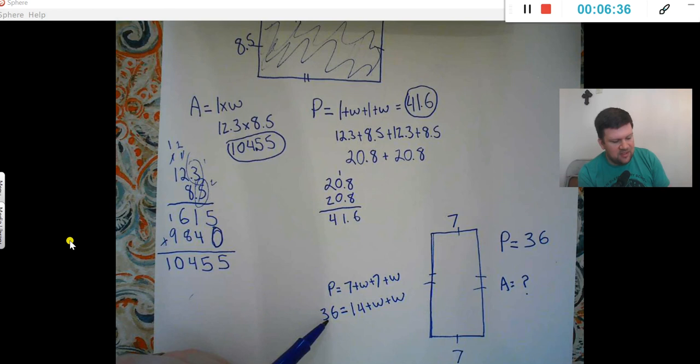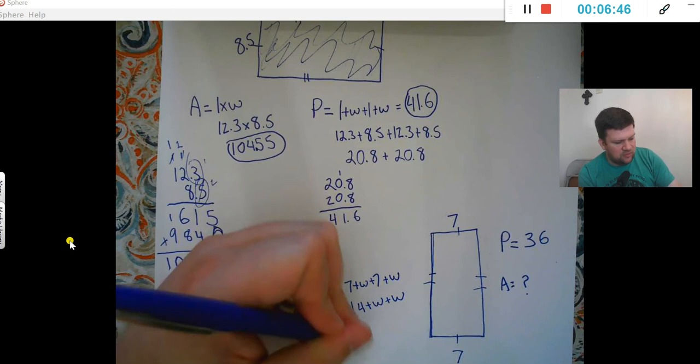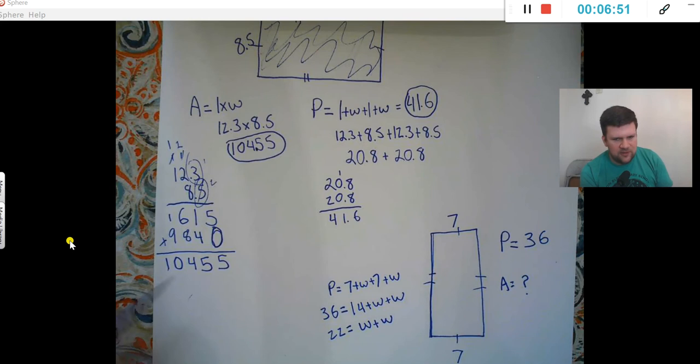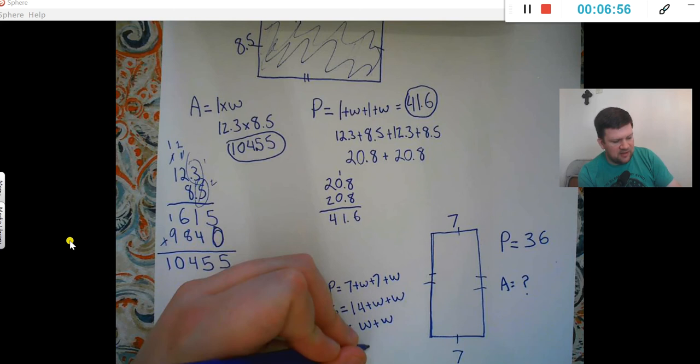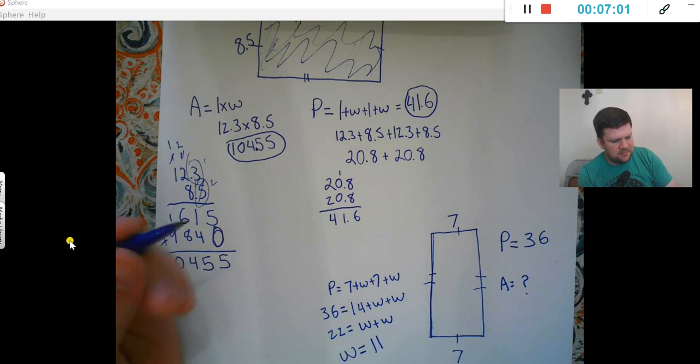So, that means whatever the width is going to be, is going to be half of this 36 minus 14. So, I'll subtract that out, which gives me 22 equals width plus width. So, hopefully you see both those widths. The width should be 11. Because 11 plus 11 is 22. So, the width is 11.